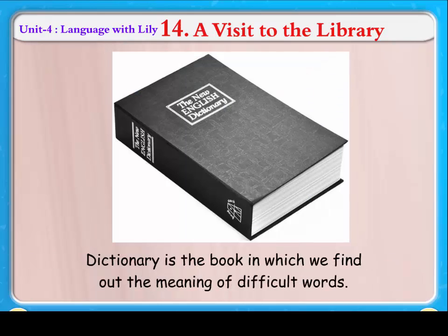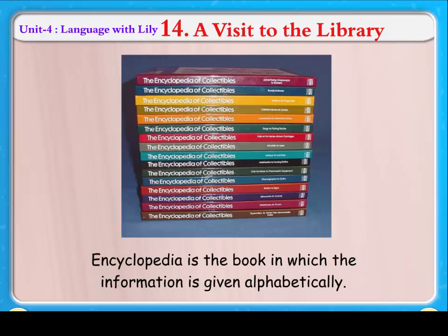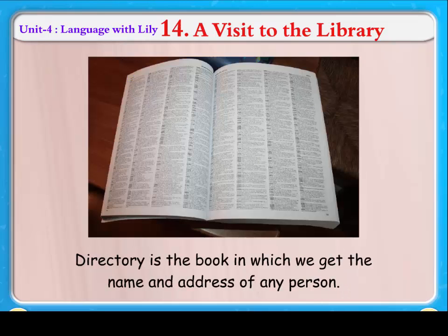Dictionary is the book in which we find out the meaning of difficult words. Encyclopedia is the book in which the information is given alphabetically. Directory is the book in which we get the name and address of any person.